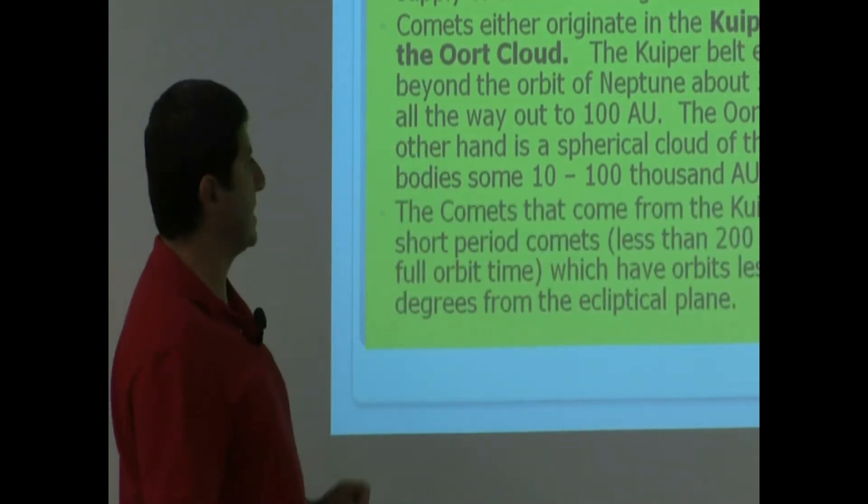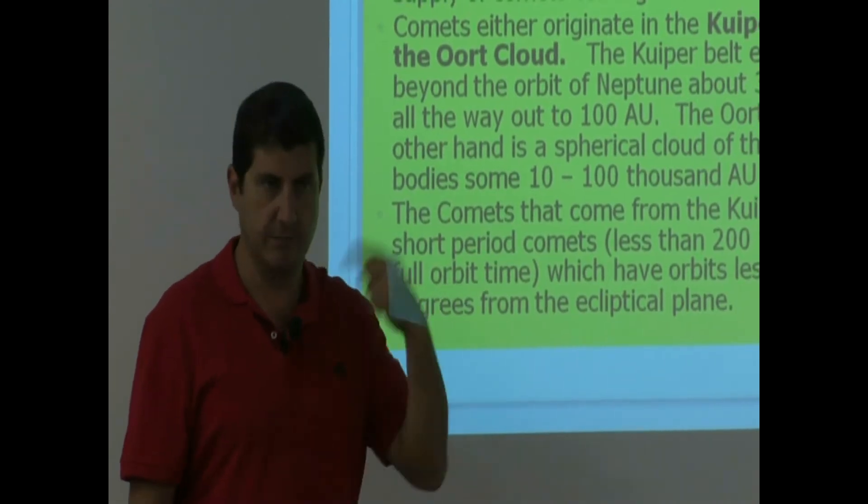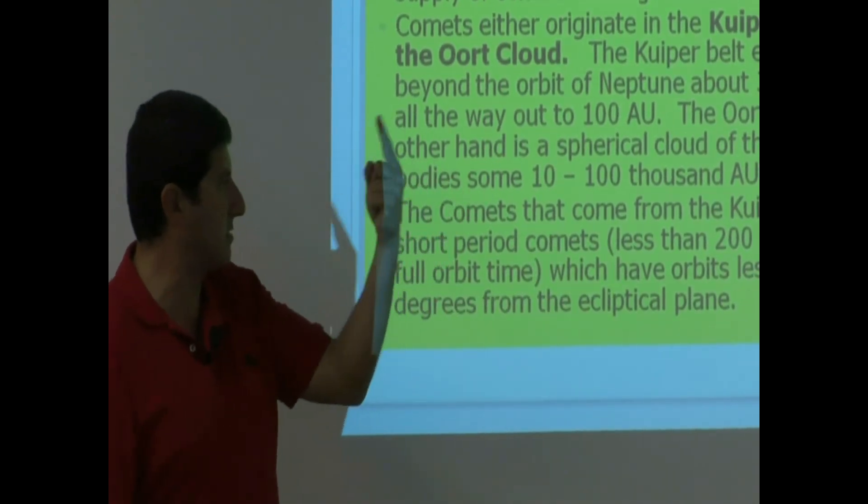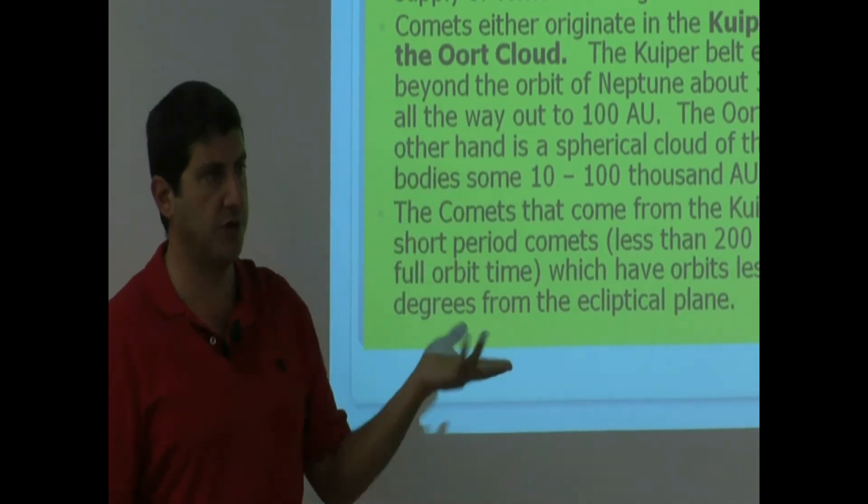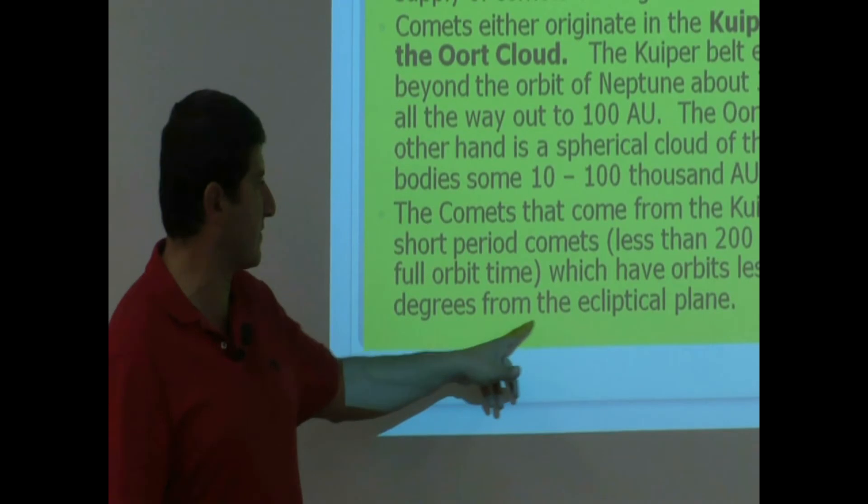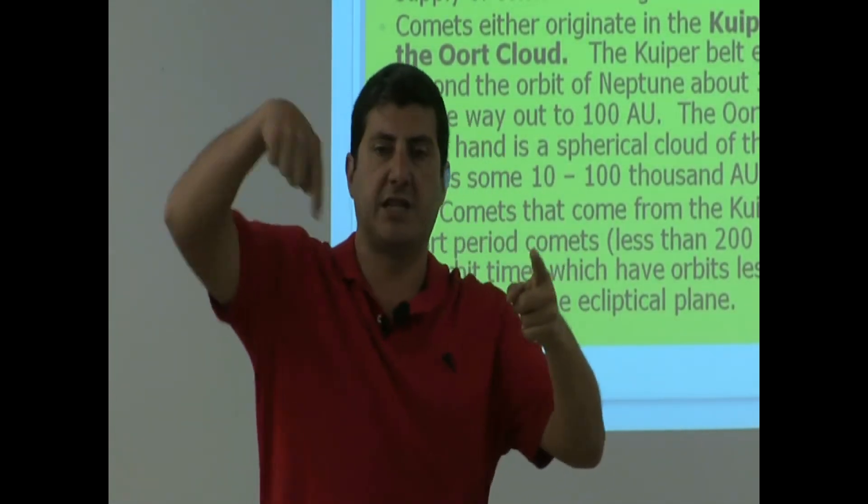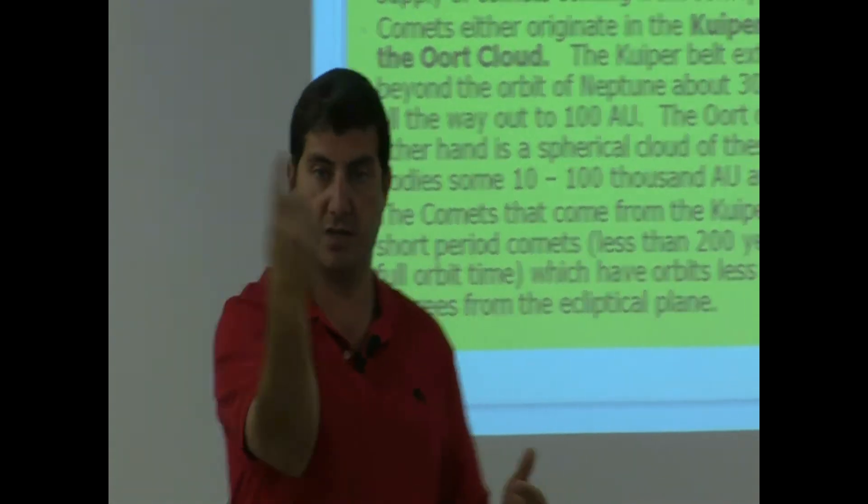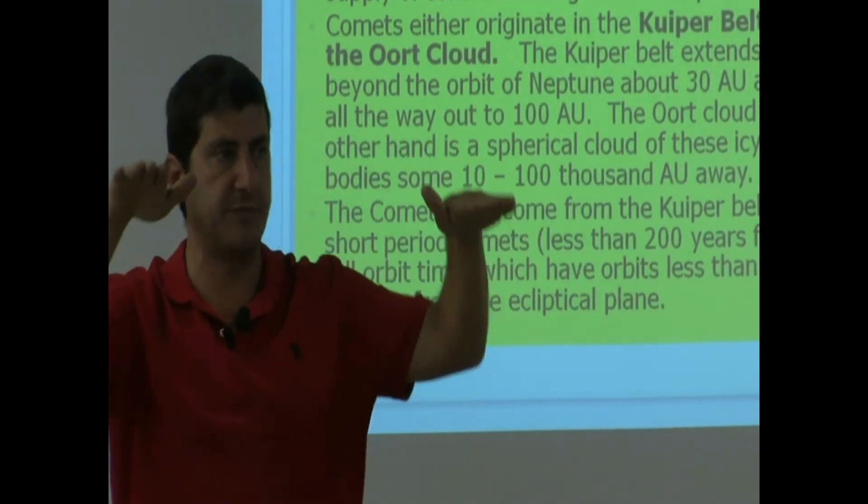The comets that come from the Kuiper Belt are short-period comets. They come very frequently, relatively speaking. They only take 200 years to come back, make a full trip. 200 years is not that long, which have orbits less than 30 degrees from the ecliptical plane. So that means, if the Earth's orbit is like this, the Kuiper Belt comets are kind of close to the ecliptical plane, like this or like that, within 30 degrees of the ecliptical plane.